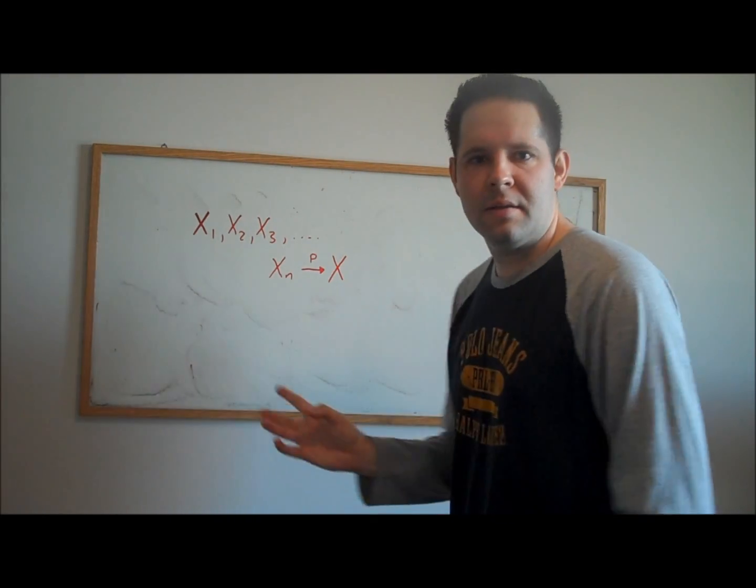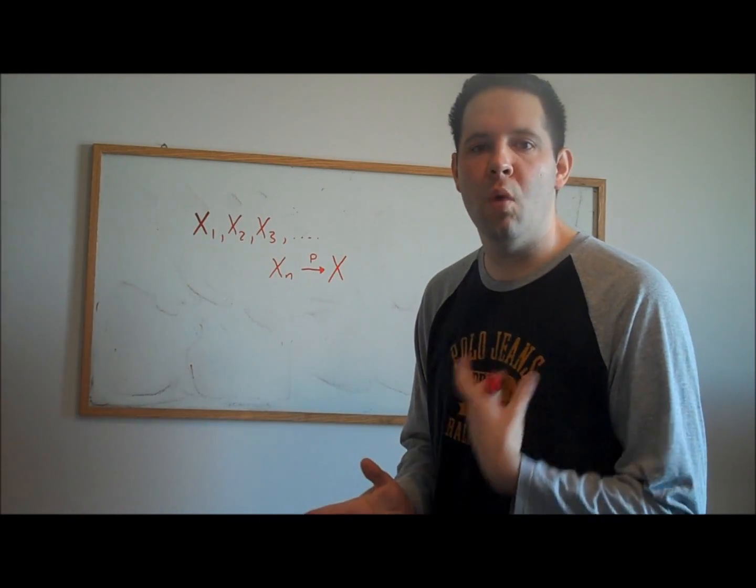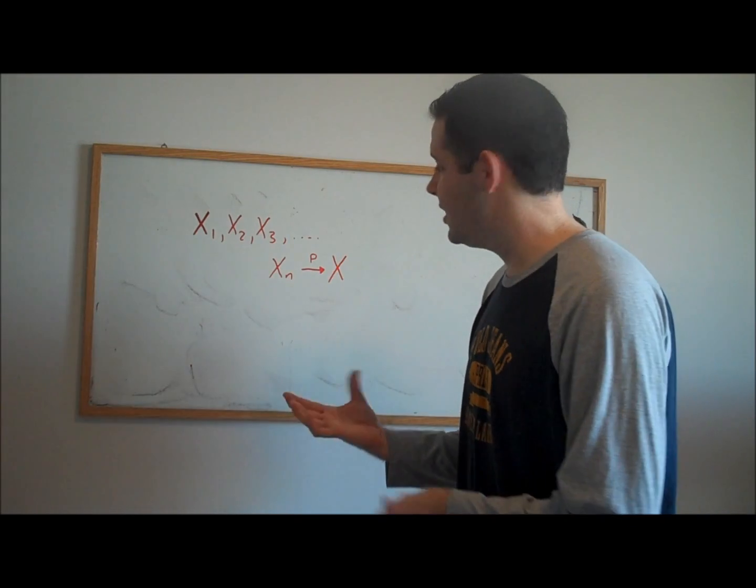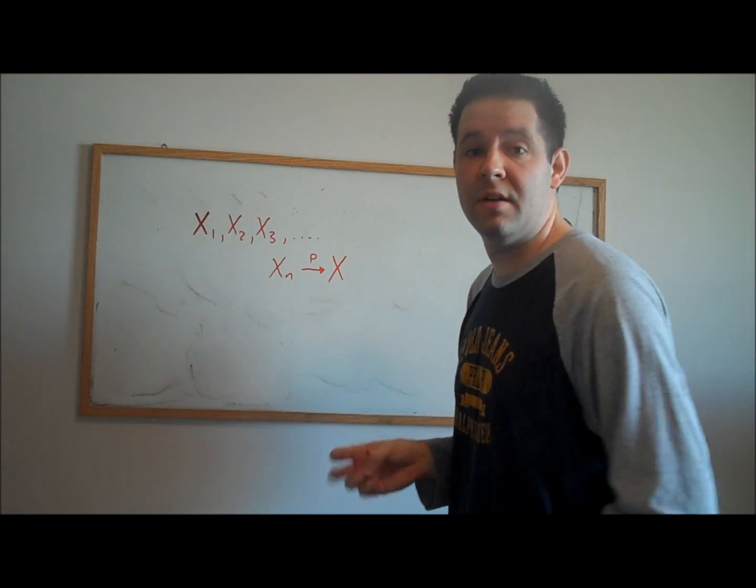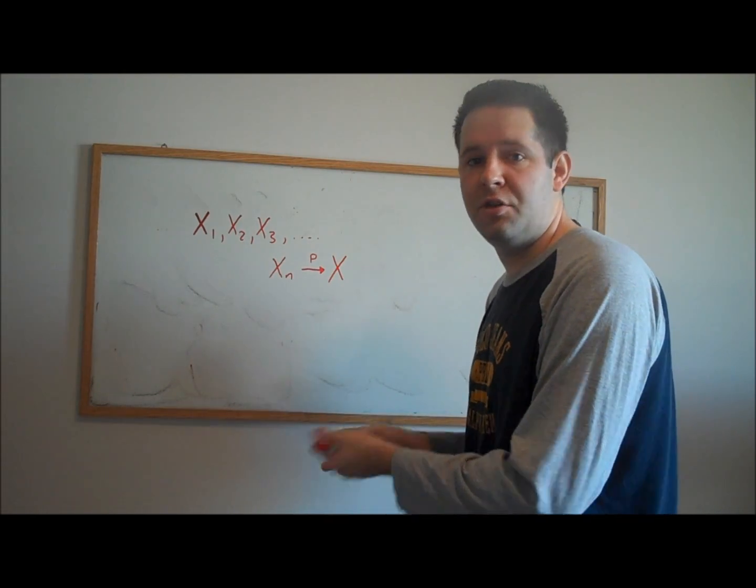We could write out the delta epsilon definition of this, or we could think about what it means. I want to think about what convergence in probability means, because it really isn't mysterious if you understand convergence of a sequence to its limit.